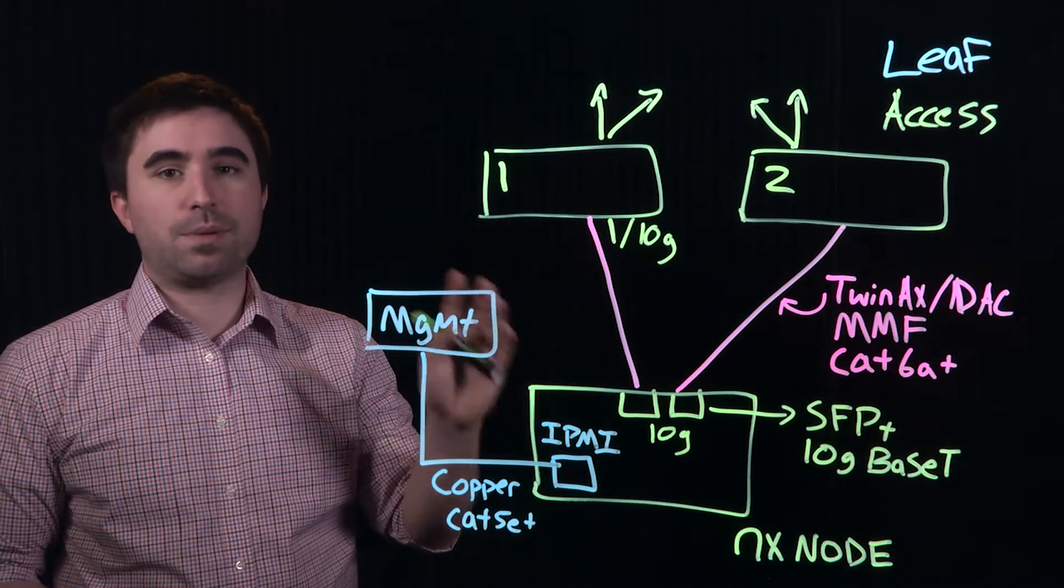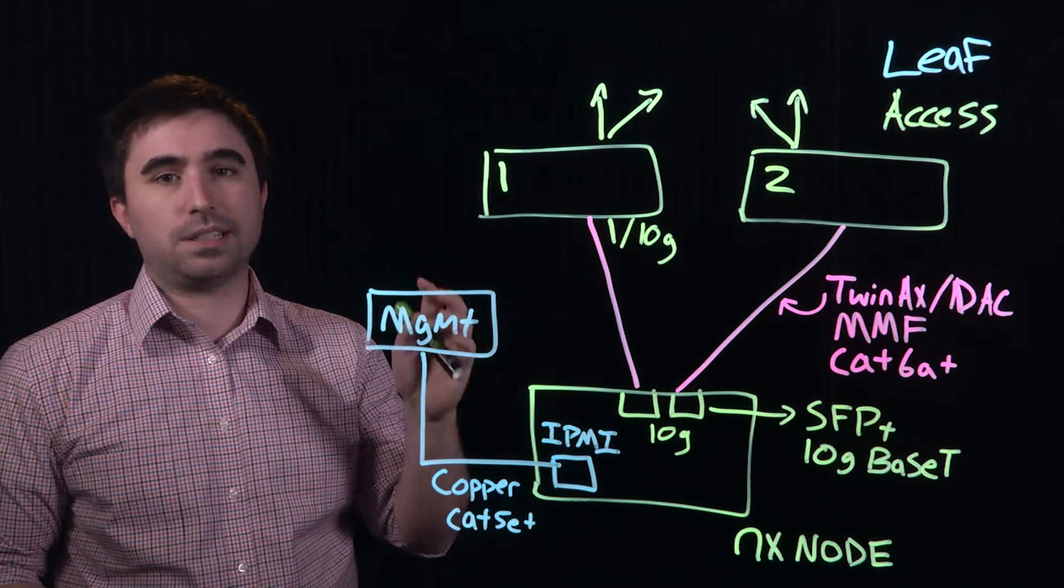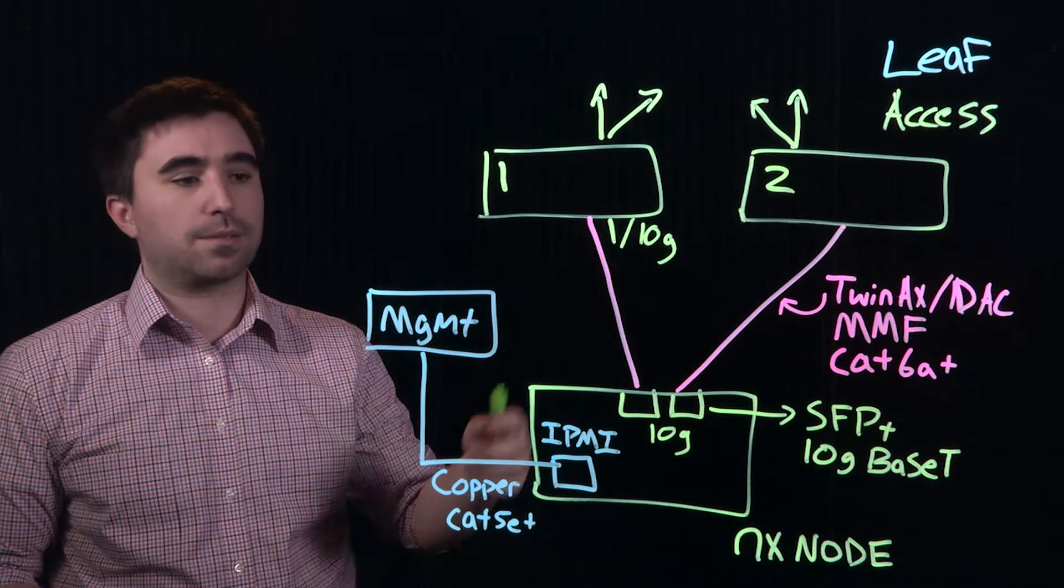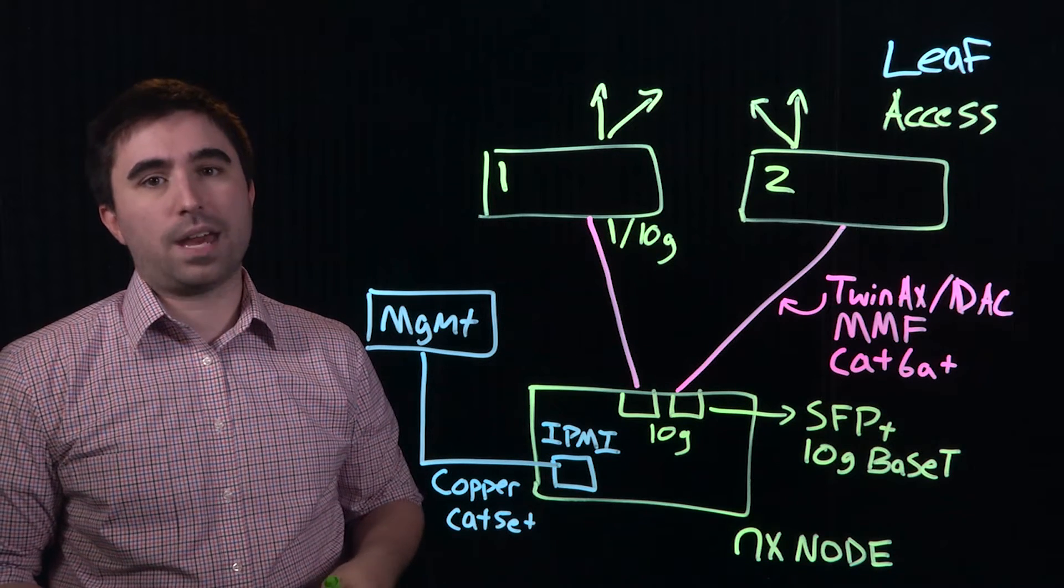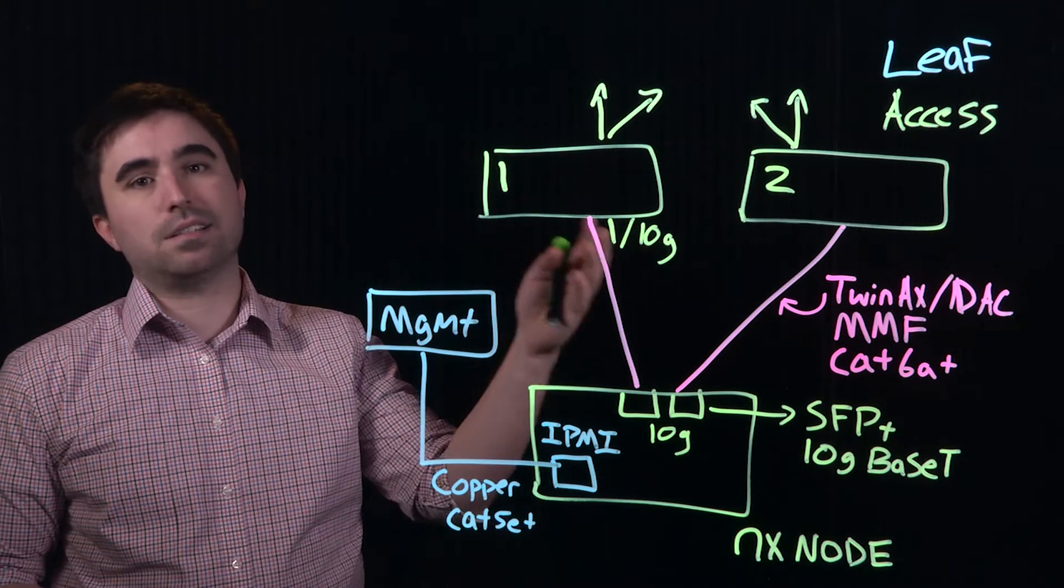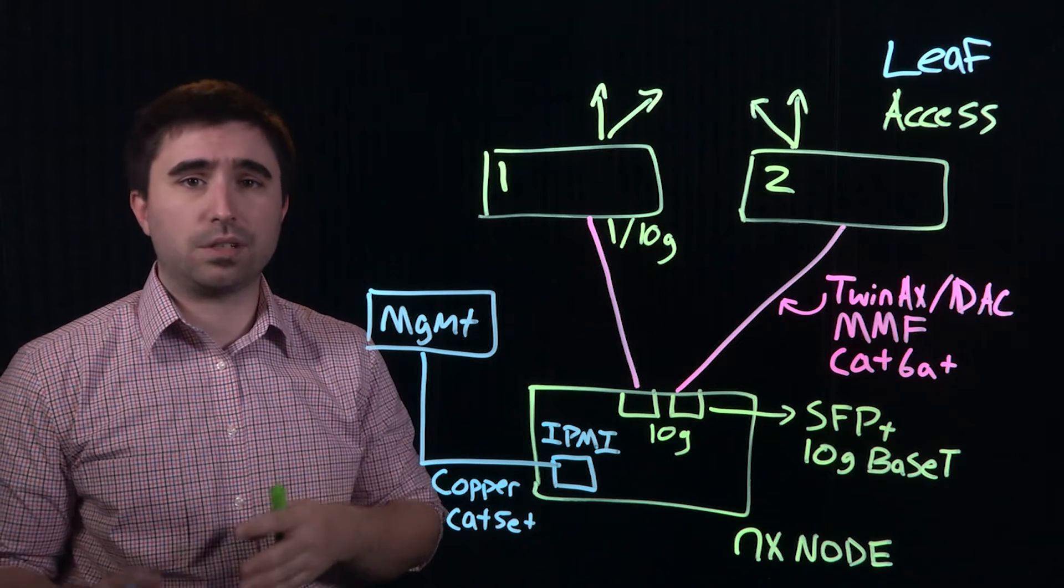I've drawn a diagram over here that shows the basic connectivity choices for connecting a Nutanix node to the enterprise network. Let's start off with how Nutanix connects to the access and leaf layers, which we've discussed in previous videos.